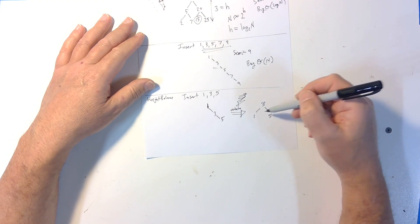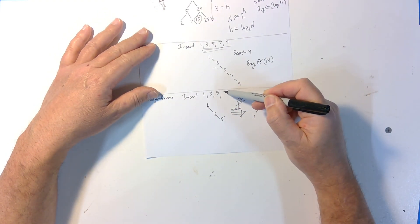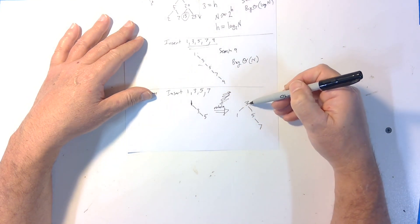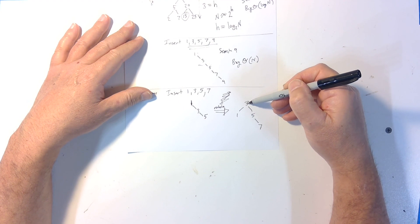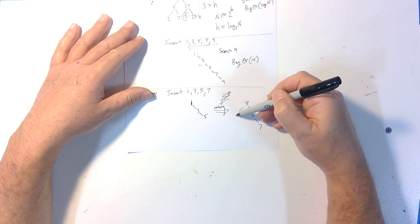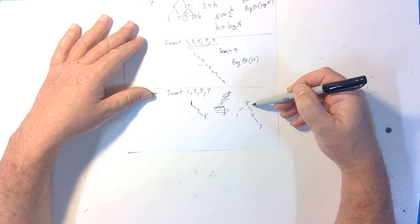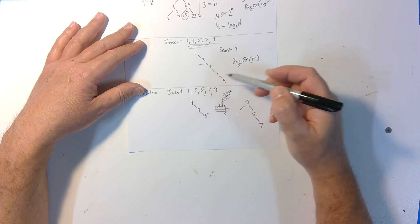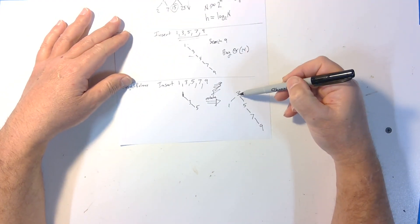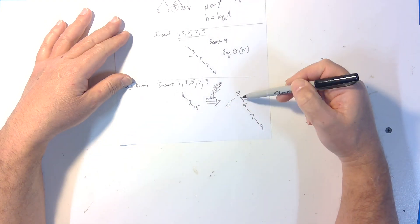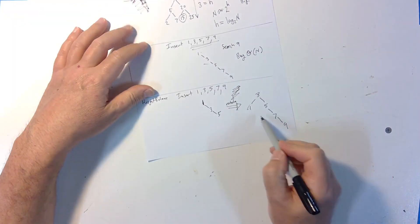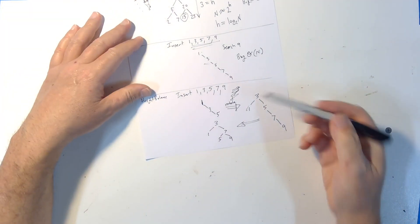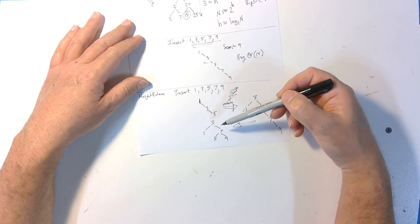You can continue in this fashion. When seven arrives, you insert it and check the balance — node three has a left branch of length one and a right branch of length two, longer on the right by one; we can't improve that. Then nine arrives — now one branch is length one and the other is length three, longer on that side by two. We can improve that with a rotation, turning it into a more balanced structure.